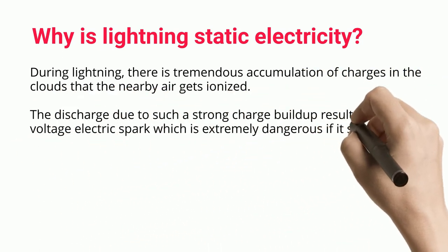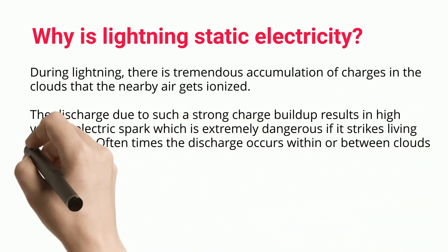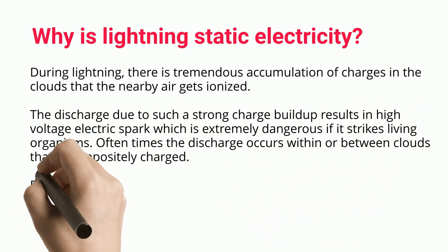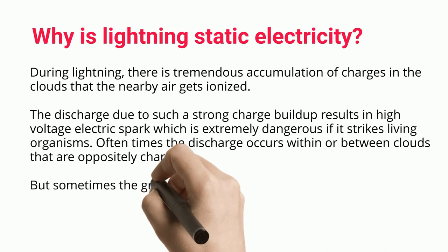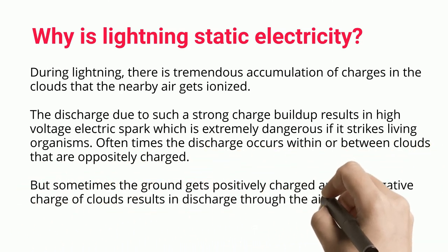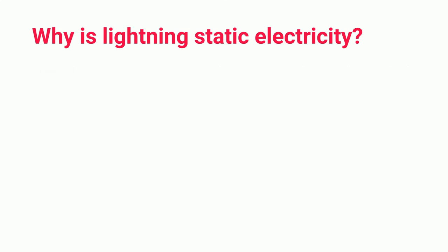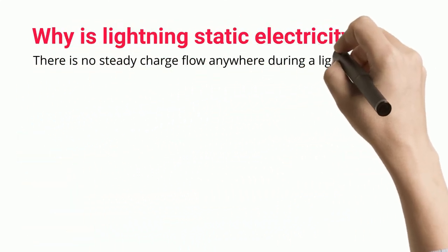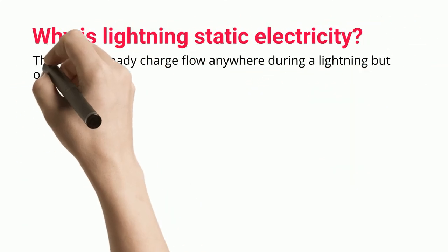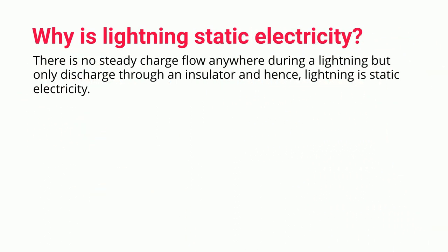The discharge due to such a strong charge buildup results in a high voltage electric spark, which is extremely dangerous if it strikes living organisms. Often the discharge occurs within or between clouds that are oppositely charged, but sometimes the ground gets positively charged and the negative charge of clouds results in discharge through the air. There is no steady charge flow anywhere during lightning — only discharge through an insulator — and hence lightning is static electricity.